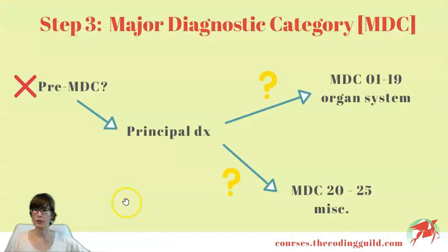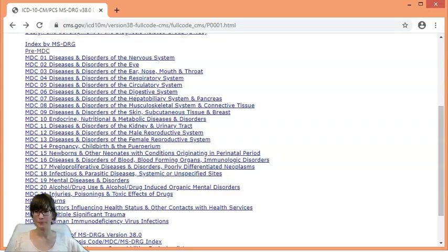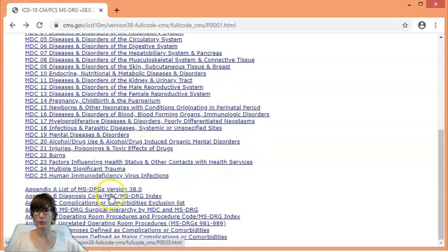But how do we know which major diagnostic category our principal diagnosis will belong to? We look it up in Appendix B — the diagnosis code MDC-MSDRG index. For example, let's look up atrioventricular block, first degree, code I440.